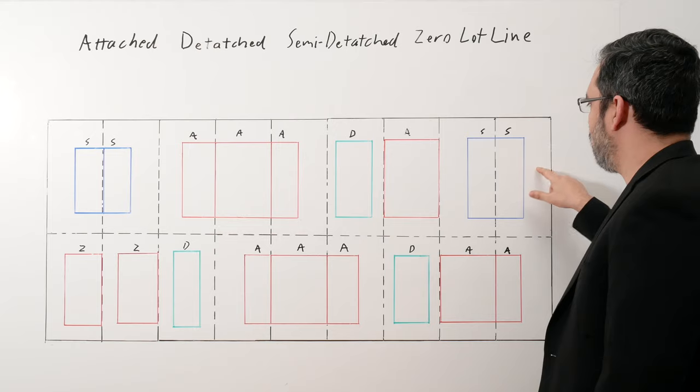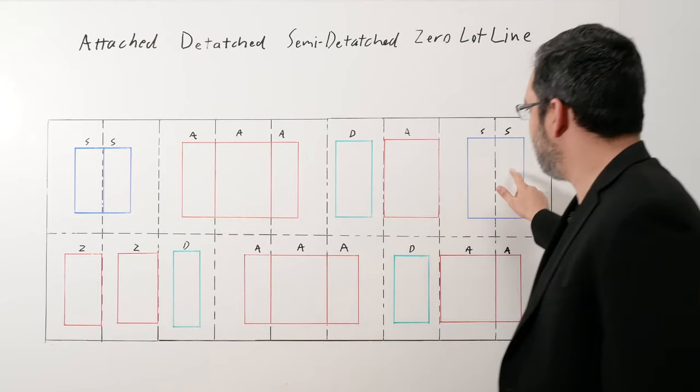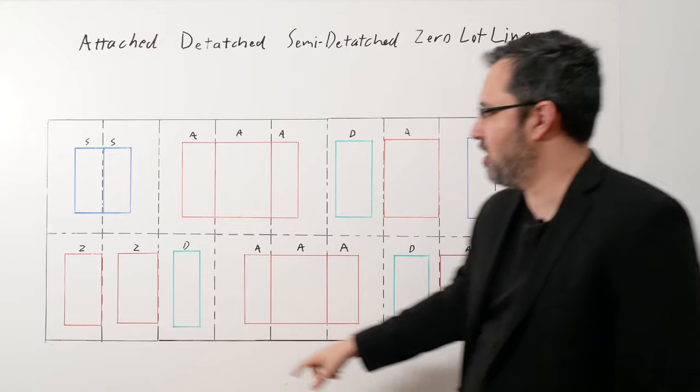A semi-detached has yards on two sides and connected down the middle. That's the only condition. It's just like that condition where it's going to be semi-detached.